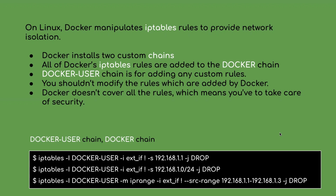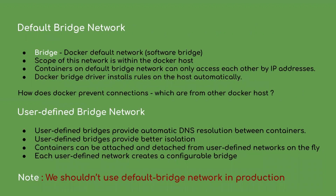Now let us take a look at Docker network options. The first one is Docker's default bridge network. By default, if you don't specify any network option while starting a container, Docker attaches the default bridge network to it. The scope of a bridge network is within the Docker host itself, meaning containers deployed in the same Docker host can only communicate with each other; they cannot connect to containers on a different host. Docker uses software bridge to create a virtual IP address for each container, allowing inter-container communication. One thing to remember: the default bridge network should not be used in production, because there is no control over connectivity among containers connected to it.